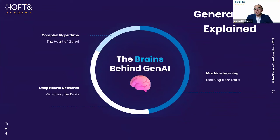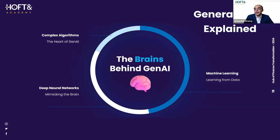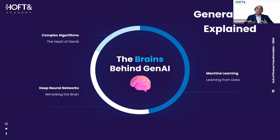Now let's understand the brains behind generative AI and how it actually works. When you hear generative AI technology, you don't think about it as something that just generates content for you — it actually has a complex algorithm that enables it to generate relevant content based on what you feed it, because it's not going to generate anything at random. It uses the information you feed it to generate the content you want. It also incorporates machine learning technology to learn from the data, as well as deep neural network technology to mimic how the human brain works and develops over time.